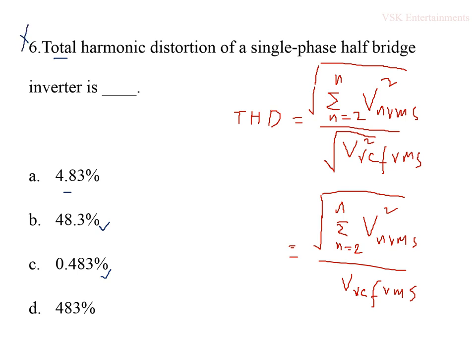The sixth question: total harmonic distortion (THD) of a single-phase half-bridge inverter. THD is defined as the ratio of RMS values of voltages from second harmonic to nth harmonic, to the RMS value of the reference voltage. The THD value for a single-phase half-bridge inverter is 48.3%. This is a direct bit on THD, so option B is the correct answer.